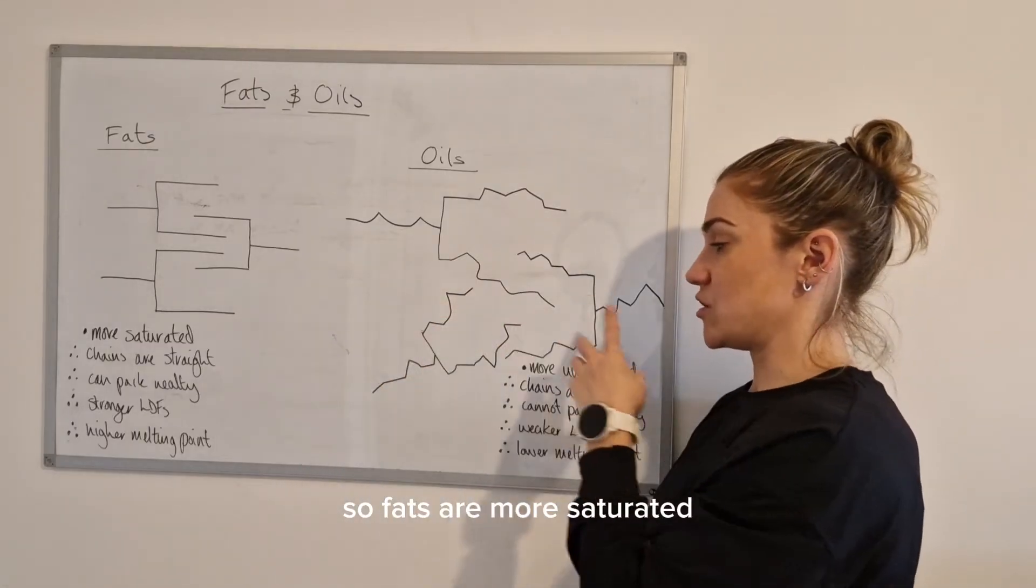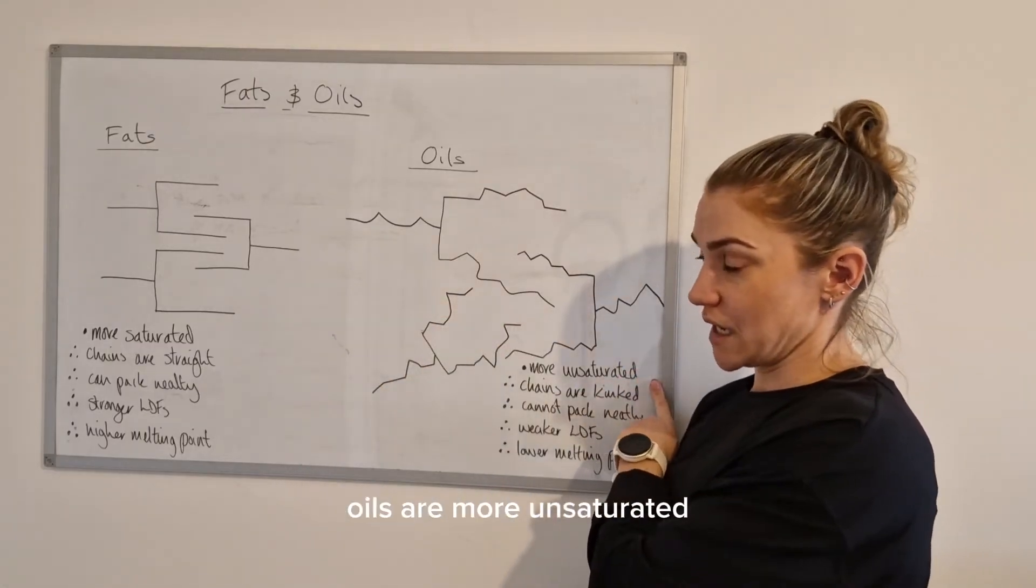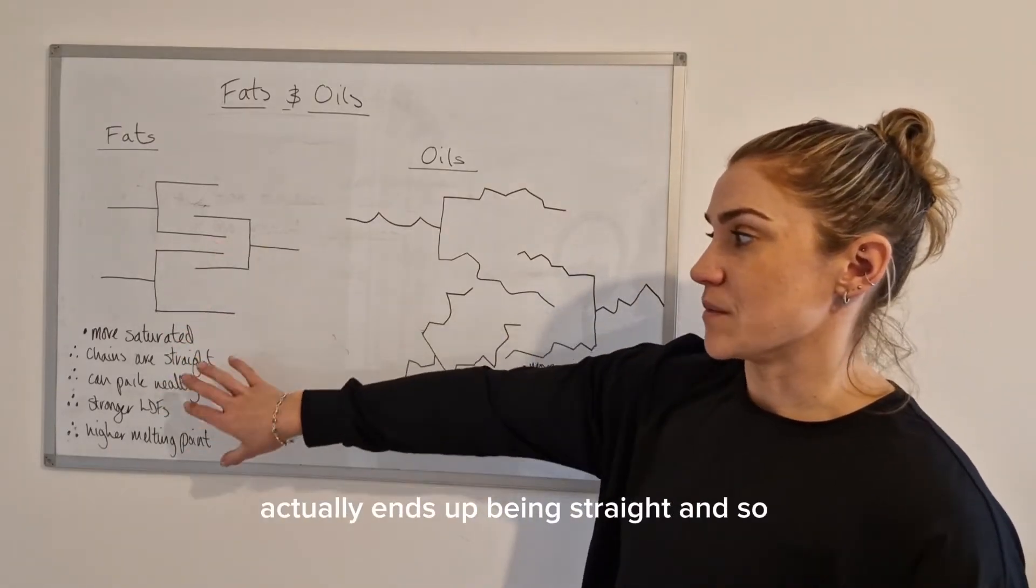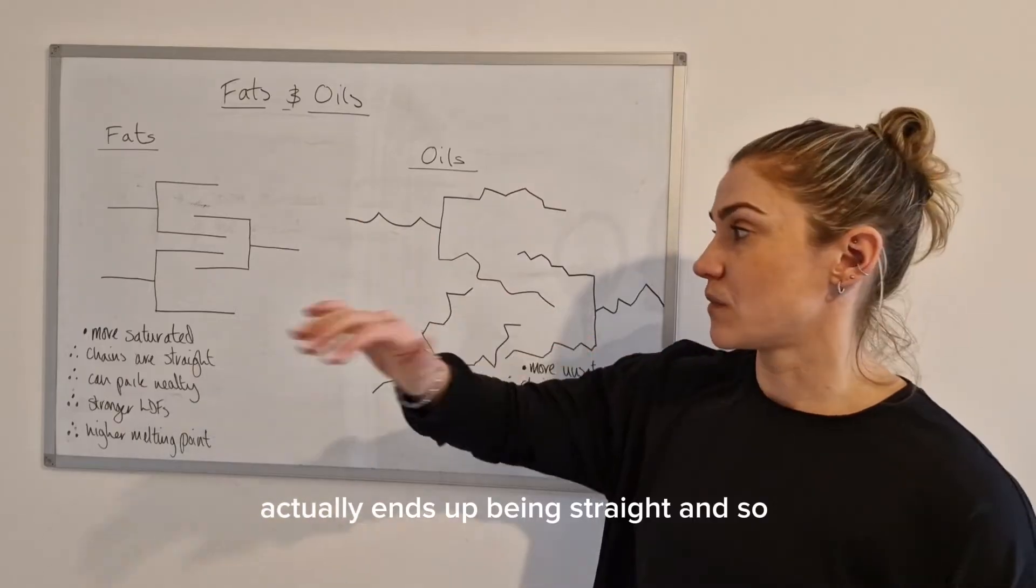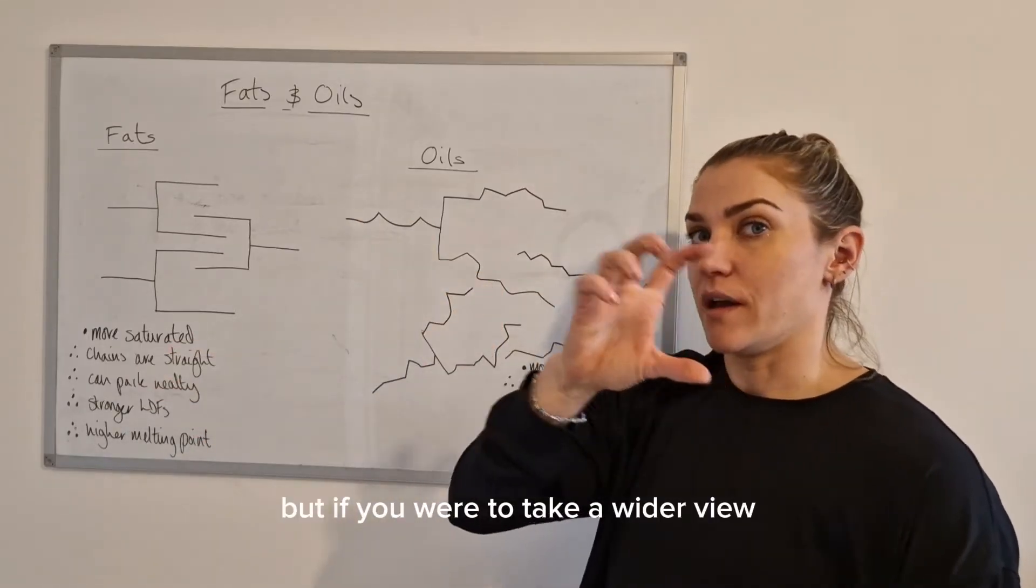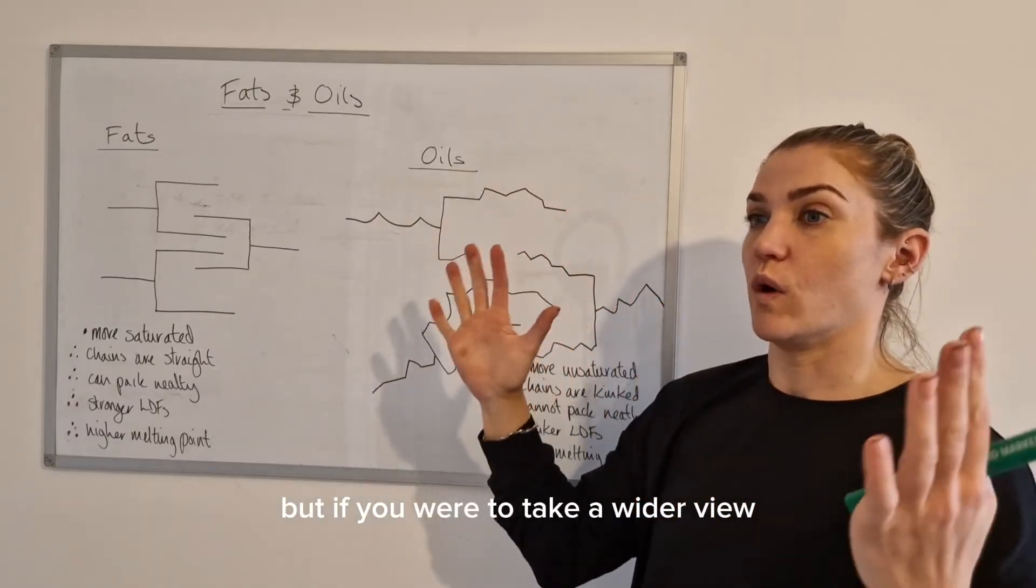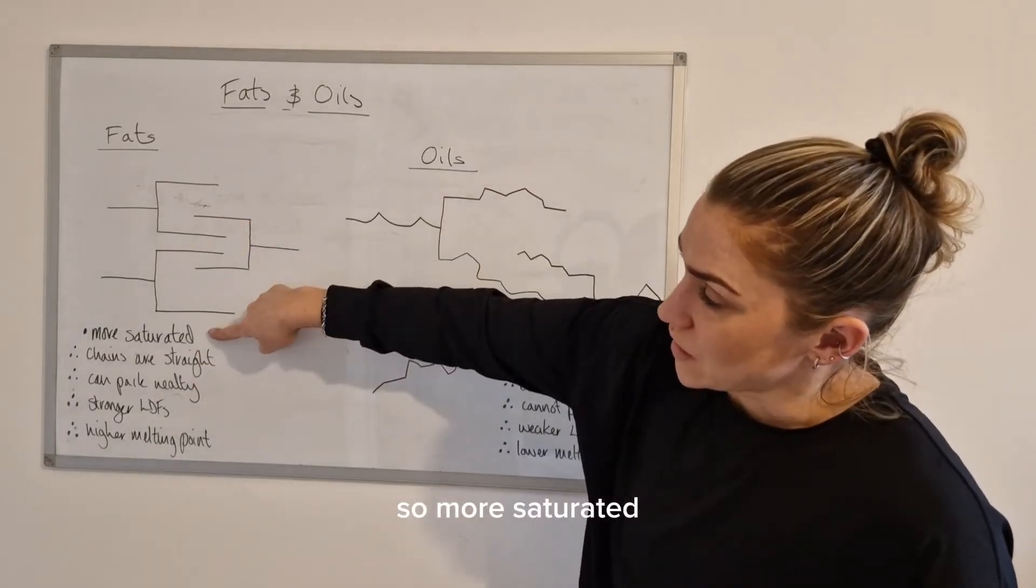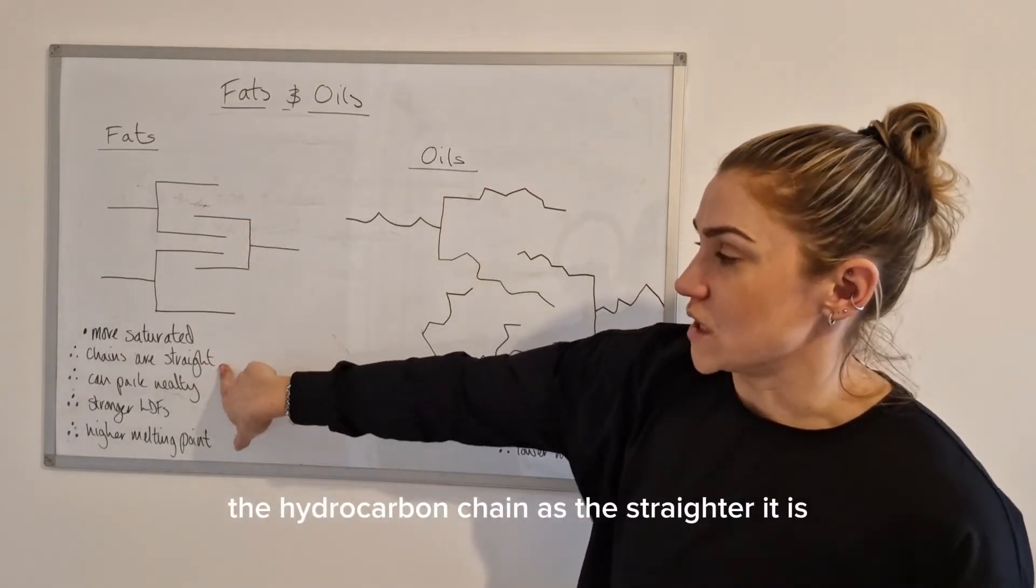Fats are more saturated, oils are more unsaturated. When a hydrocarbon chain is saturated, it actually ends up being straight. I know we draw them as zigzags, but if you were to take a wider view it would actually look straight. The more saturated the hydrocarbon chain is, the straighter it is.